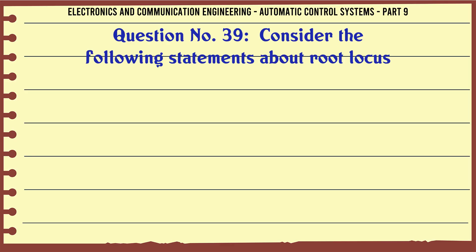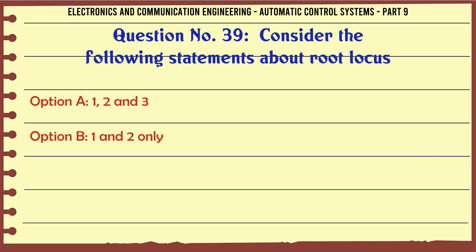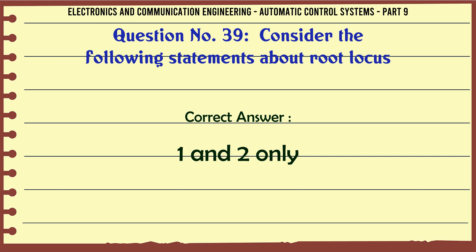Consider the following statements about root locus. Options: A. 1, 2 and 3; B. 1 and 2 only; C. 1 only; D. 2 and 3 only. The correct answer is: 1 and 2 only.